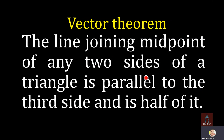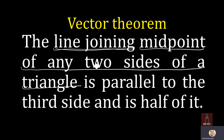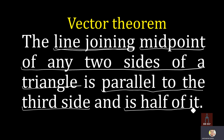The line joining the midpoints of any two sides of a triangle is parallel to the third side and is half of it.